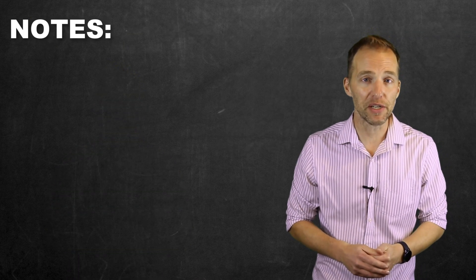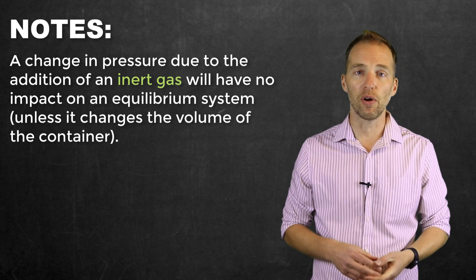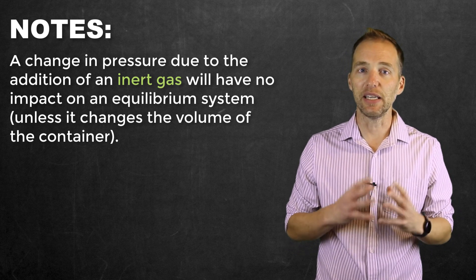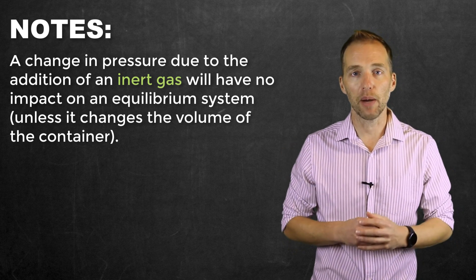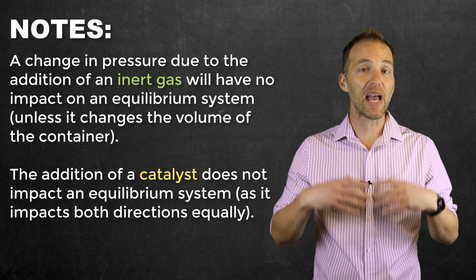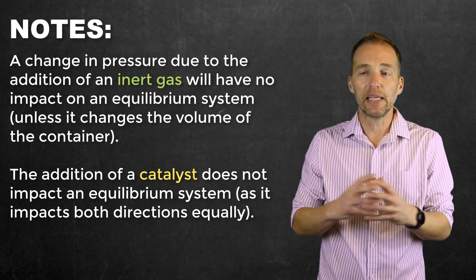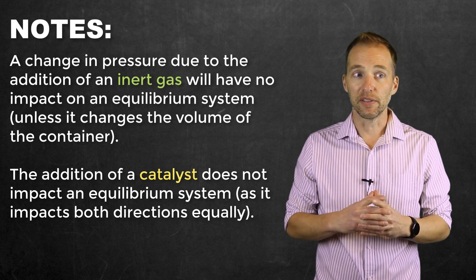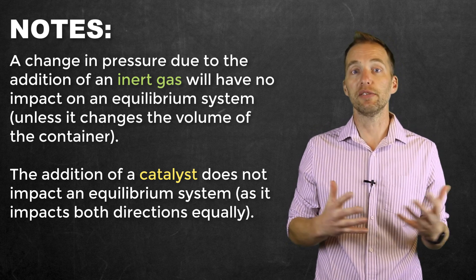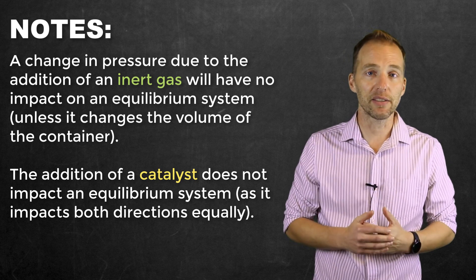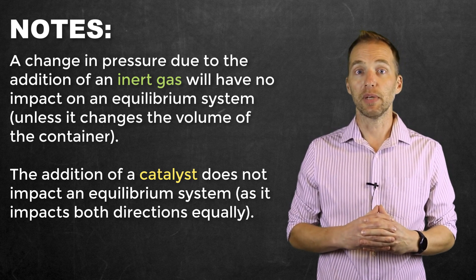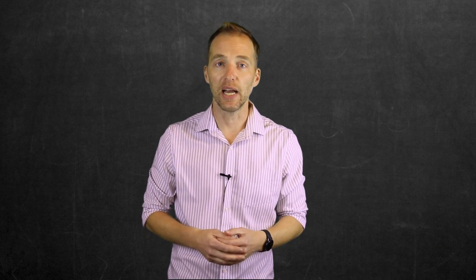It's worth noting that if a pressure change is not due to a volume change — for example, adding an inert gas like nitrogen, neon, or argon — it does not actually impact the equilibrium system, even if there are unequal moles of gas on each side. Similarly, adding a catalyst to a system already at equilibrium doesn't impact it either. If the system isn't yet at equilibrium, a catalyst only increases the rate of both forward and reverse reactions equally, helping the system achieve equilibrium a little faster.